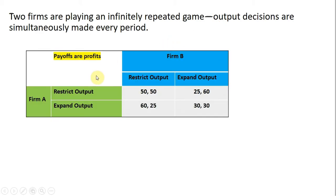Here's the payoff matrix, where the numbers represent profits. Firm A can restrict output or expand output. Firm B has the same decisions or choices.